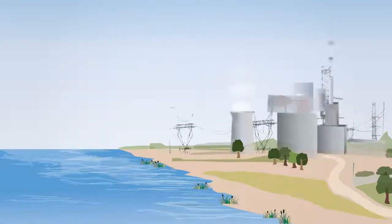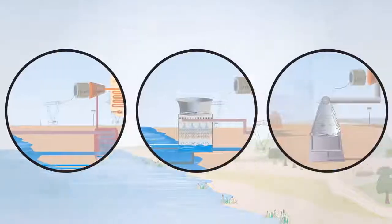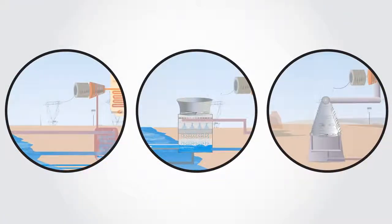The type of cooling system used in the power plant and the plant design determine how much water is consumed. There are three main types of cooling systems being used today. Let's look at these options.